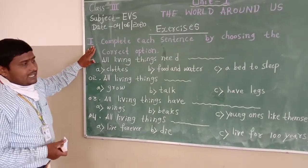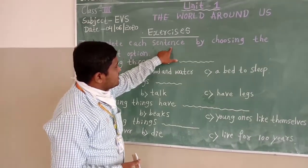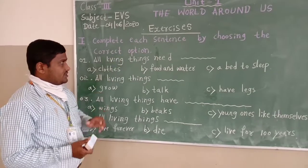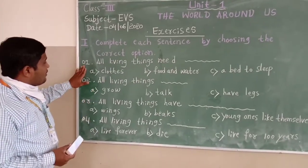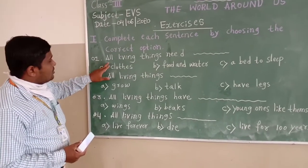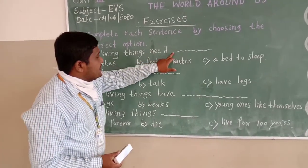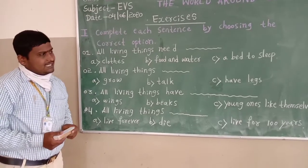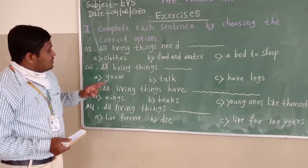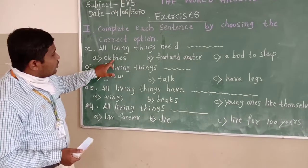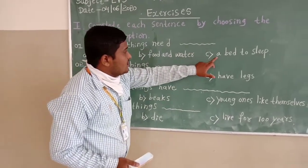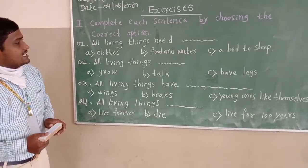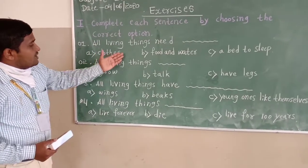First question: complete each sentence by choosing the correct options. Now I am reading the first question: All living things need blank. Can you guess the answer, students? Now I am reading the options: claws, food and water, bag to sleep. The question is all living things need blank — which is the correct answer?